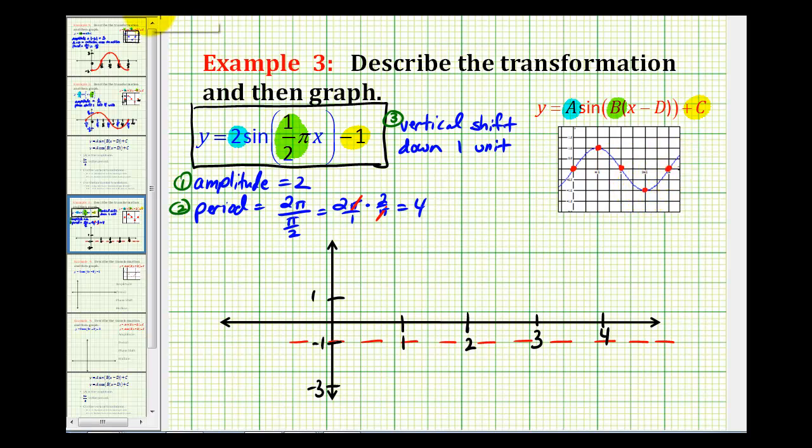So for our graph, we'll start at the midline, which is at negative one on the y-axis. The next fourth will be up at a maximum, which will be up two units to positive one. The next fourth will be back to the midline, at the next fourth we'll be at a minimum of negative three. And then we'll finish back at the midline.